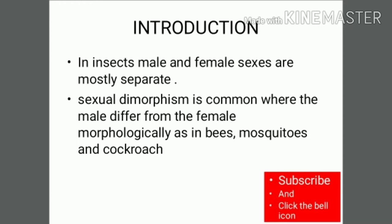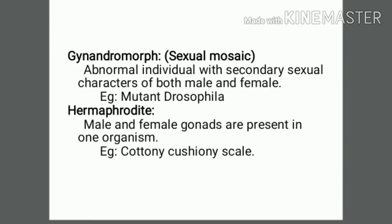Examples of sexually dimorphic insects include bees, mosquitoes, and cockroaches. A gynandromorph is an abnormal individual with secondary sexual characters of both male and female — for example, mutant Drosophila. A hermaphrodite has both male and female reproductive organs or gonads present in a single organism, for example the cottony cushion scale.